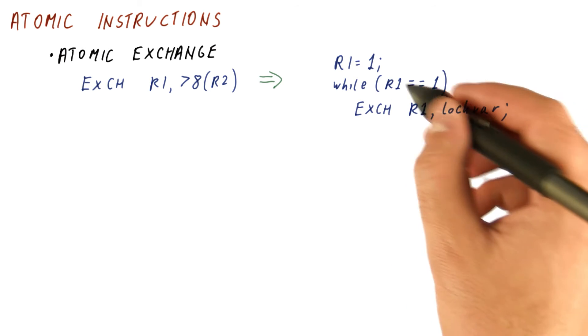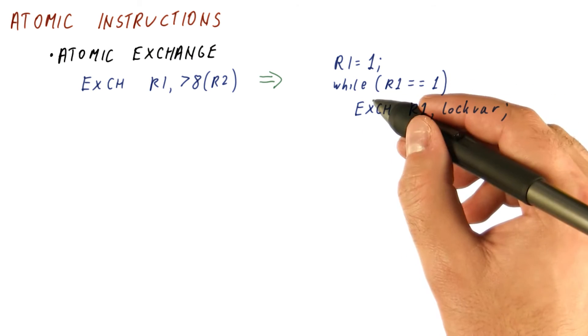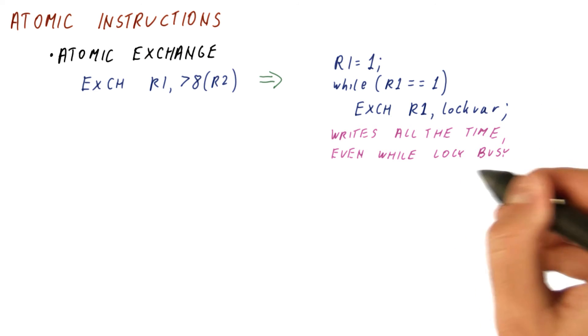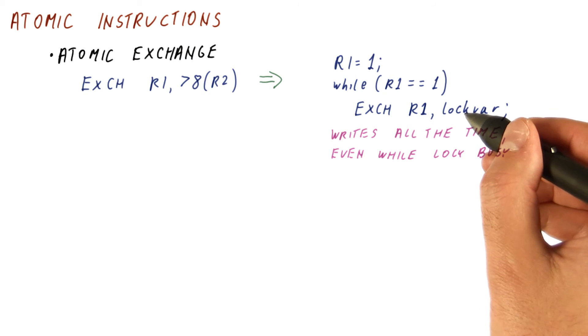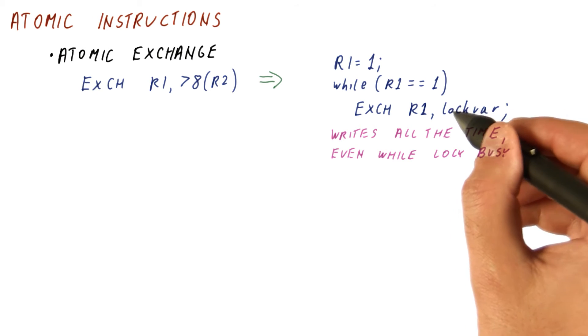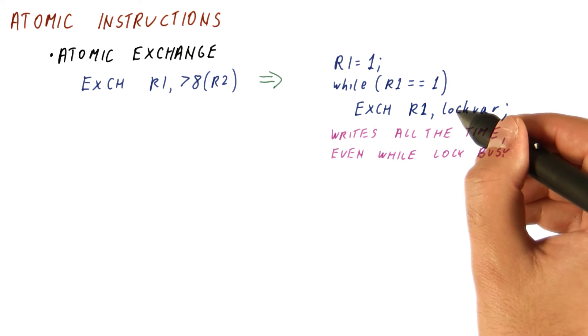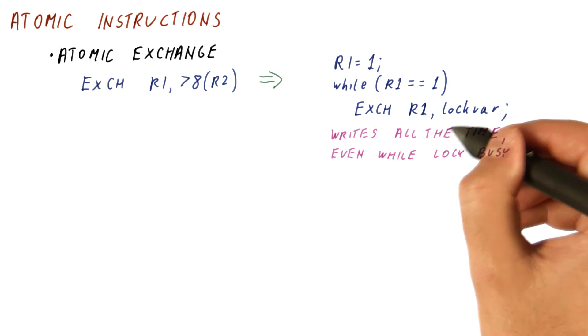The drawback of the atomic exchange operation is that it keeps writing to the memory location all the time, even while the lock is busy, while the lock has been locked by somebody else. So as long as we are doing this, we will be doing these writes, even though we are just getting a 1 all the time.